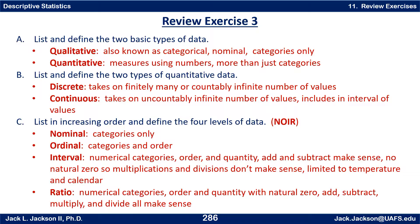The two types of quantitative data are discrete and continuous. Discrete data takes on a finitely many or countably infinite number of values — for example, only ten different values, or all possible whole numbers but not values in between (countably infinite). In contrast, continuous data takes on an infinite number of values including a whole interval of values, so no matter how finely you break it up, there are always numbers in between.